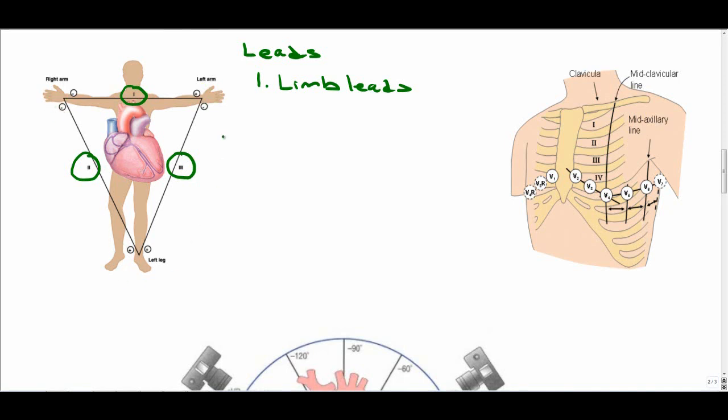Limb lead three is negative towards the left arm and positive towards the left leg. This is important because it helps show which way depolarizations are going. For example, if you have a depolarization going toward a positive area of a lead, that deflection will be upward or positive on the EKG.